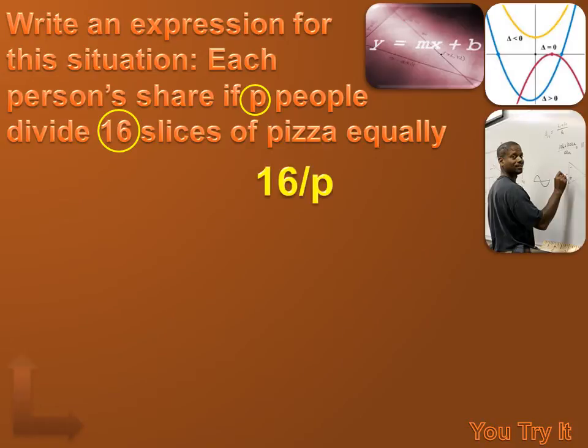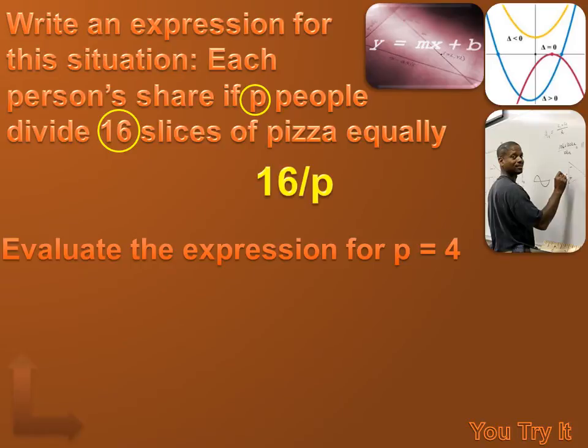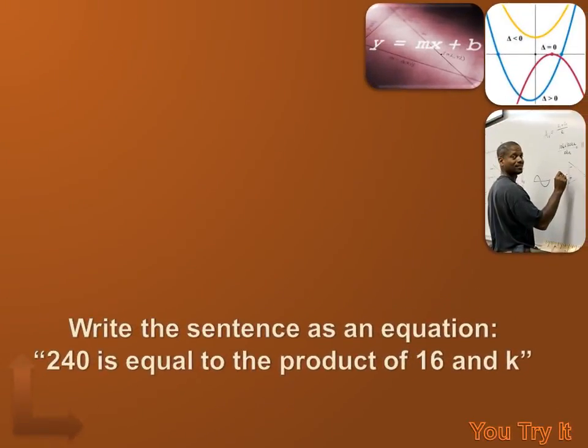My expression is 16 divided by P. Now, it's going to ask me to evaluate the expression for the time when P equals 4. That means I'm going to substitute 4 for P, and it's going to read 16 divided by 4. And 16 divided by 4 equals 4. Try this one. Hit your pause button. Try the problem. And then move on to my answer on the next slide.